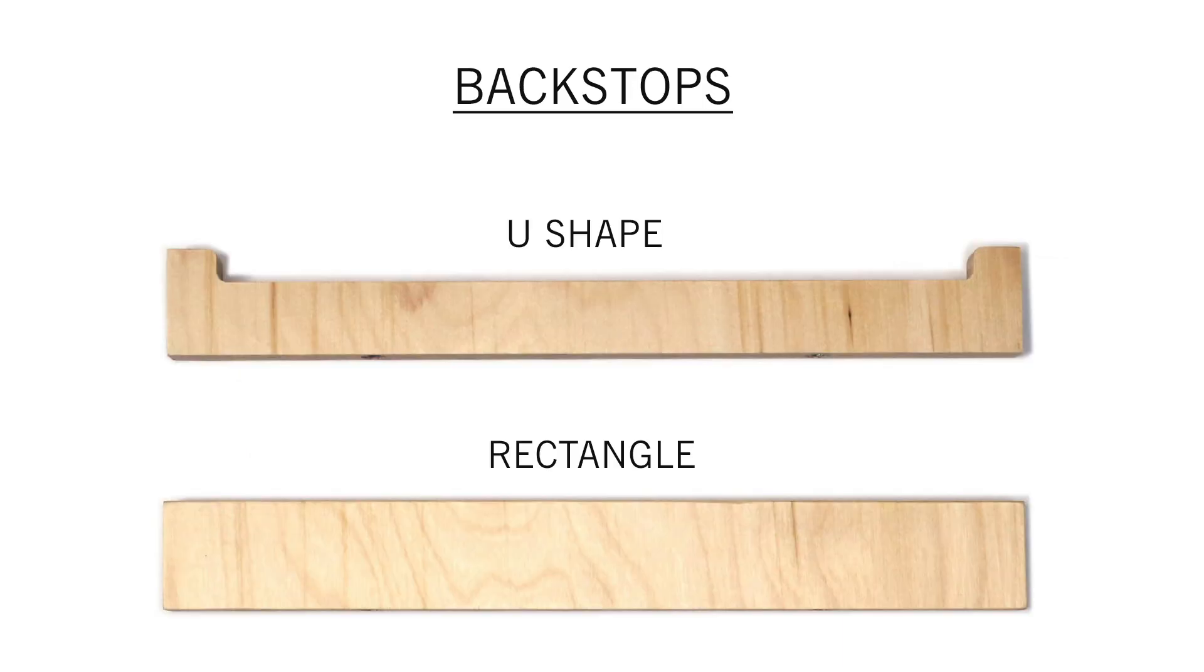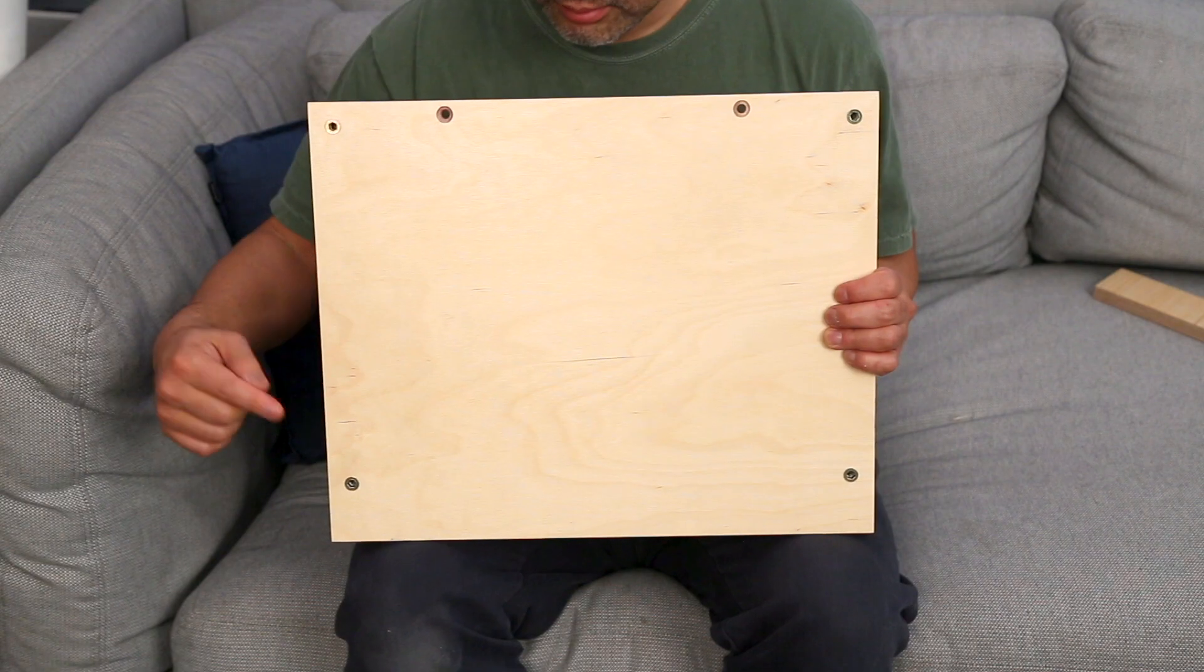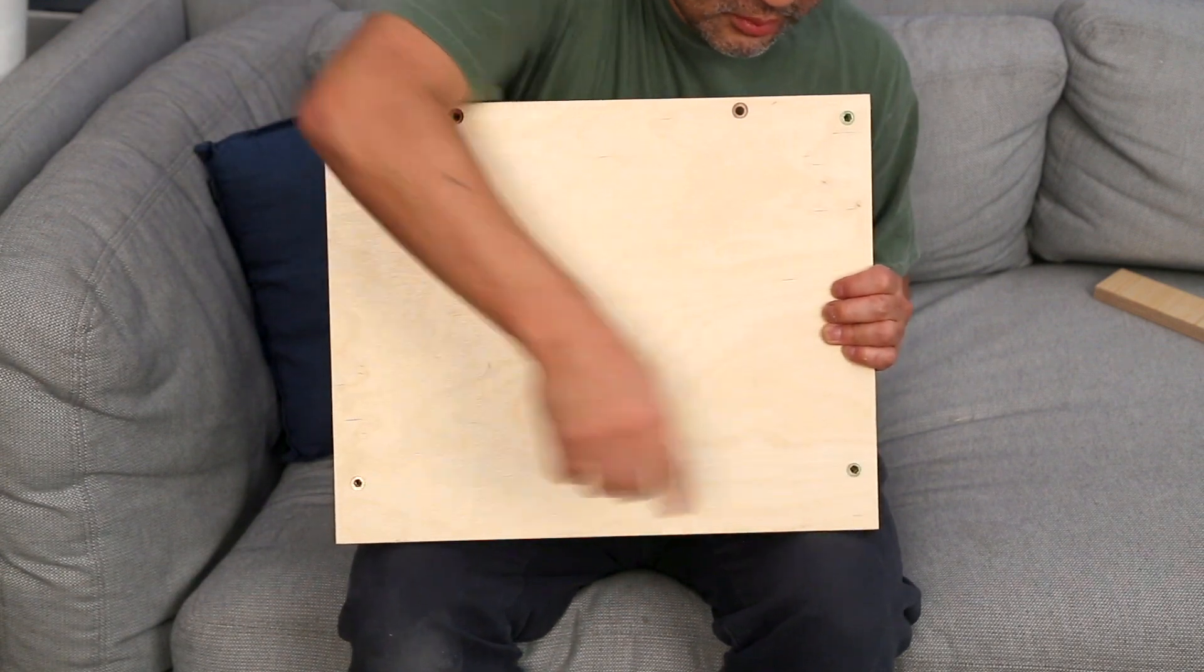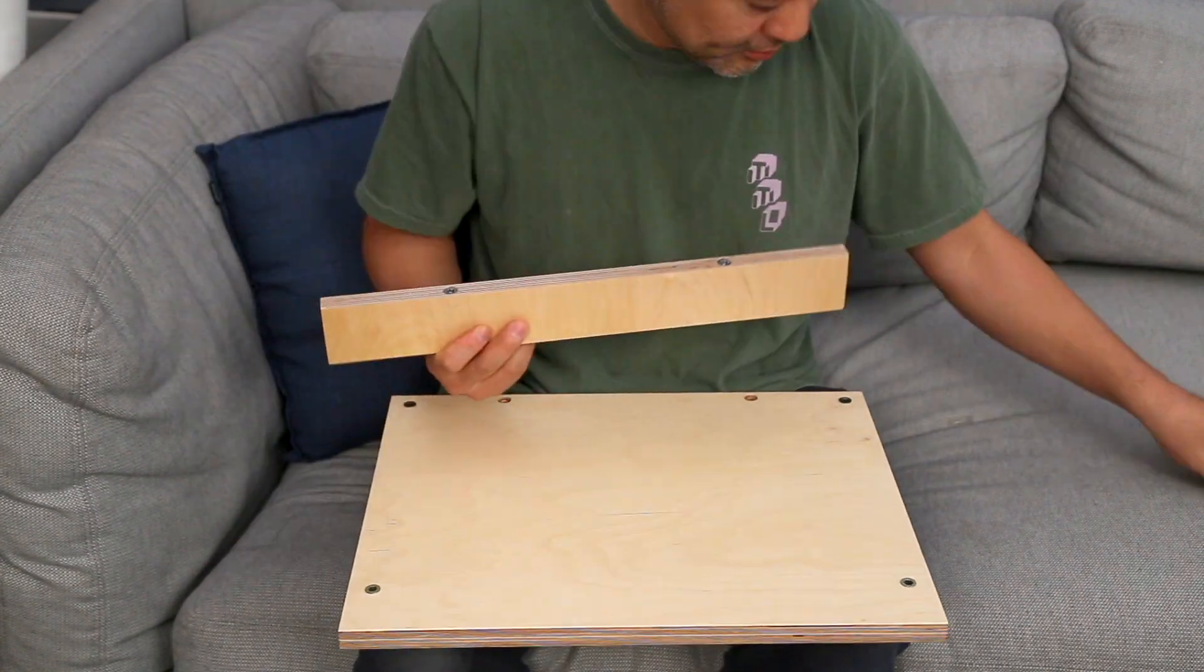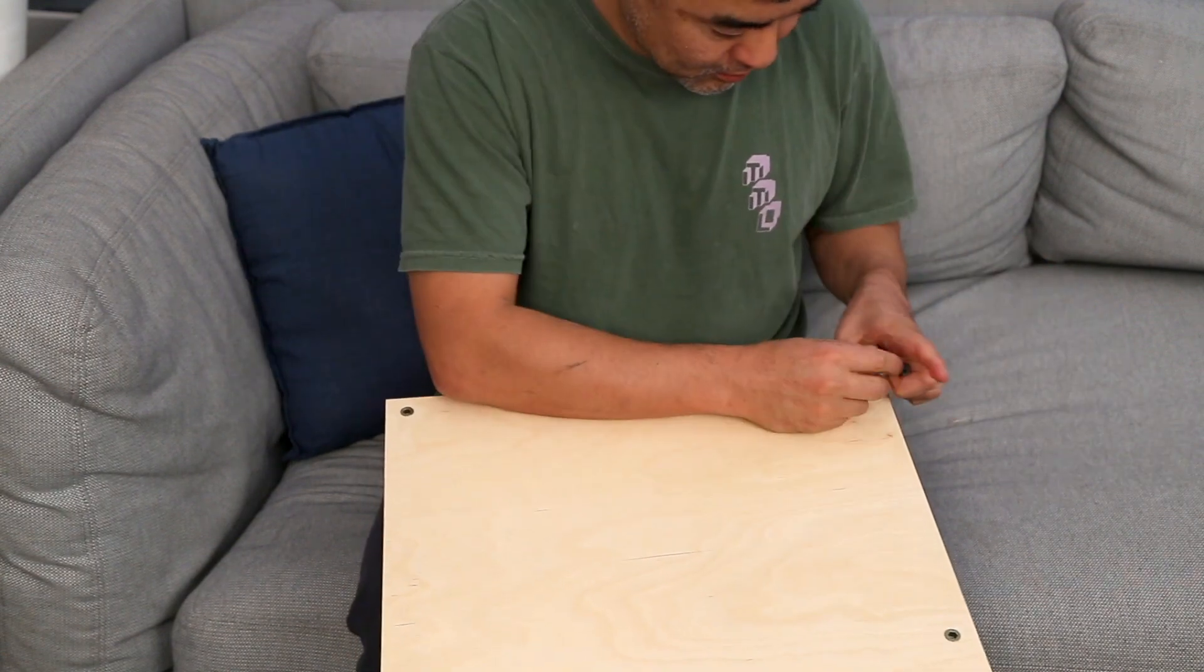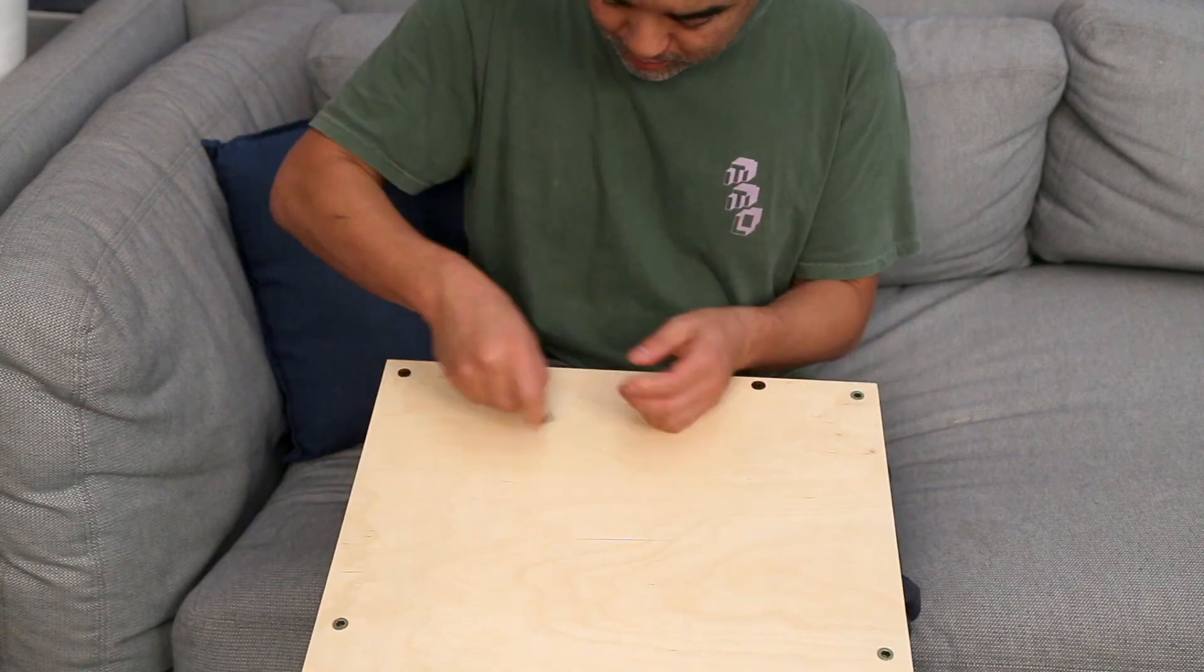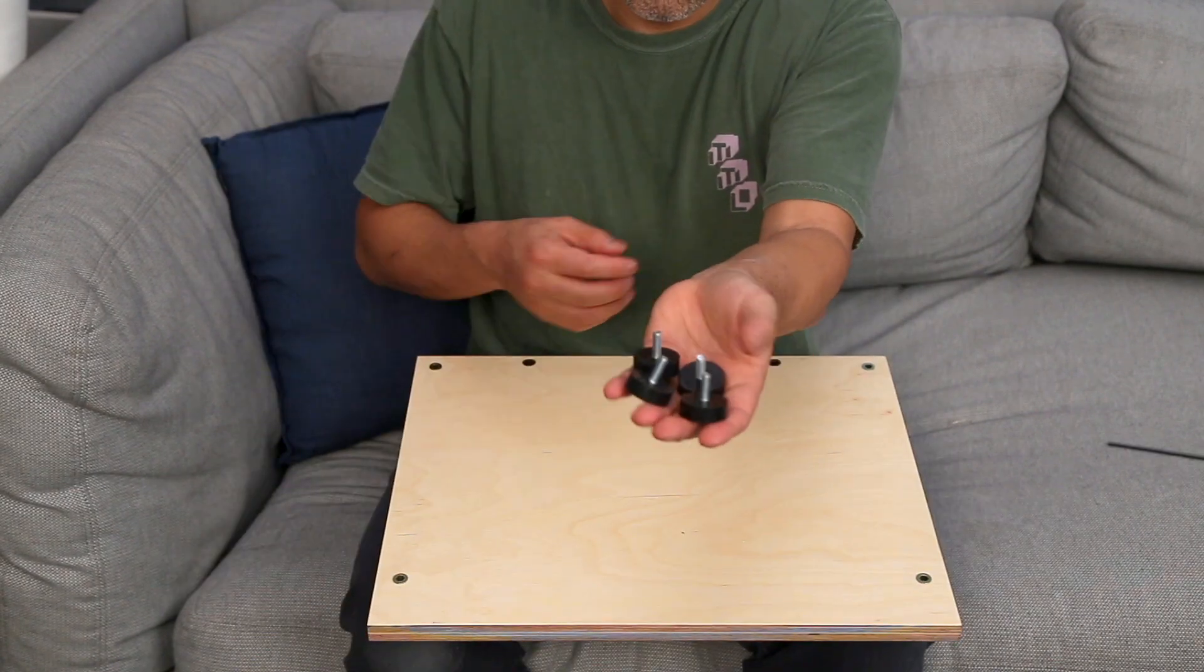Locate the backstops. Locate the bottom shelf. This can be identified by the six screw holes. Locate the rectangular backstop piece. Note carefully, there are two backstops. You want the piece with a rectangular shape for this step. Screw in the four feet in the corners.